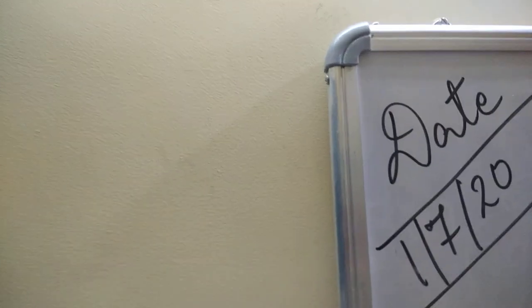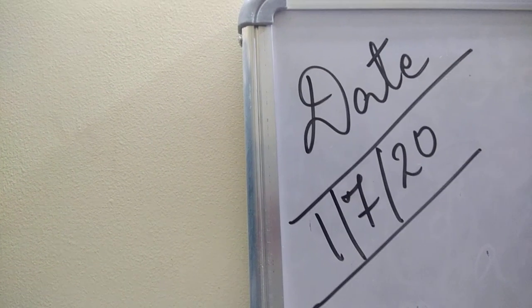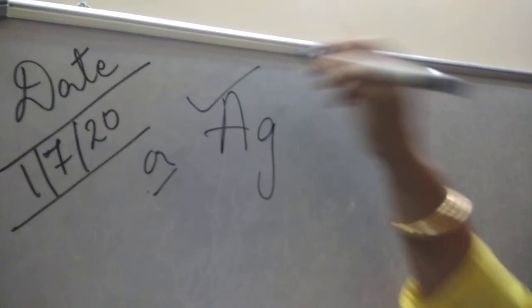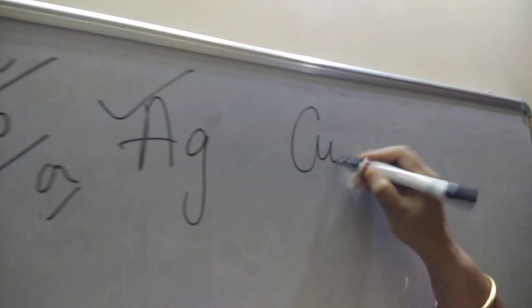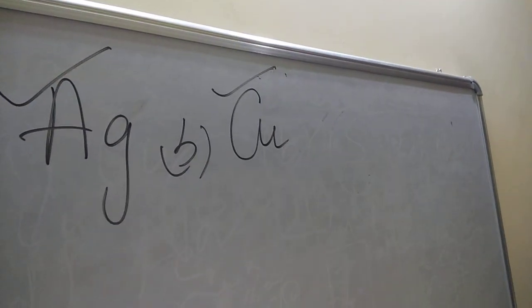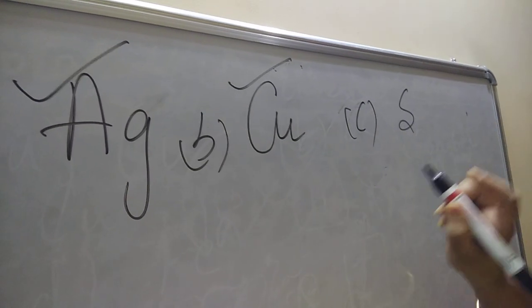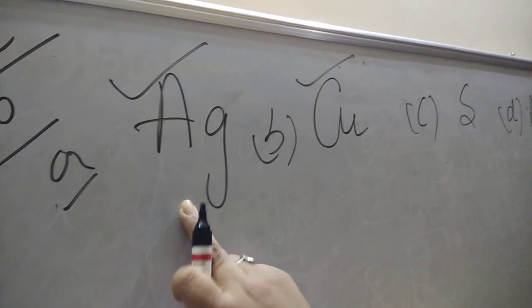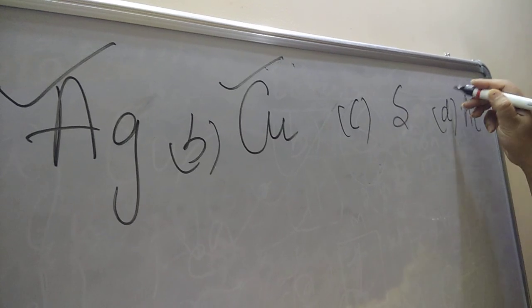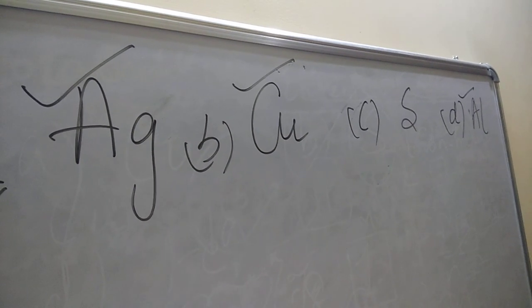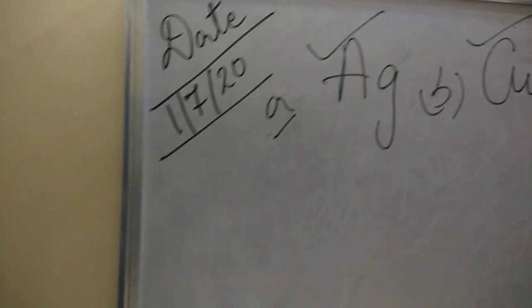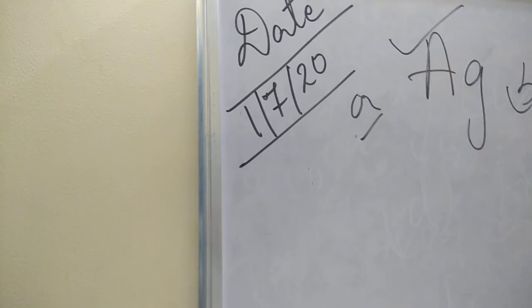Question 3: Materials which can be drawn into wires. This property is ductility. Options: A) Silver (Ag) — metal; B) Copper — metal; C) Sulfur — non-metal; D) Aluminium — metal. Three are metals and one is non-metal. The substance not following the ductility rule is the non-metal — option C, Sulfur.